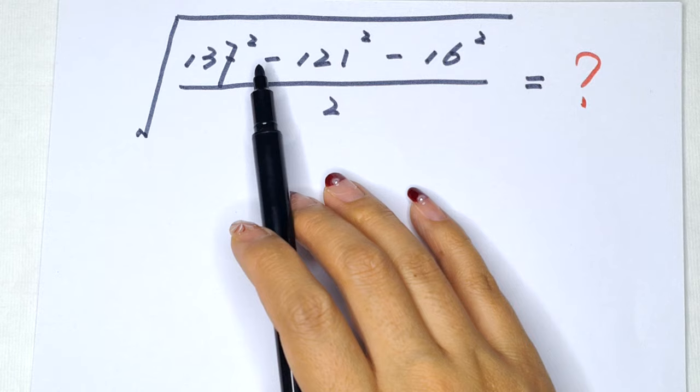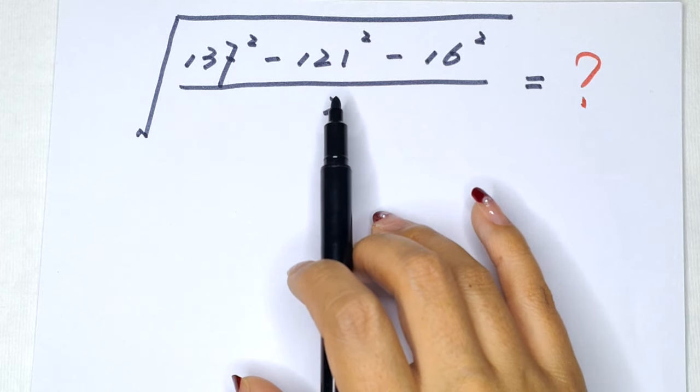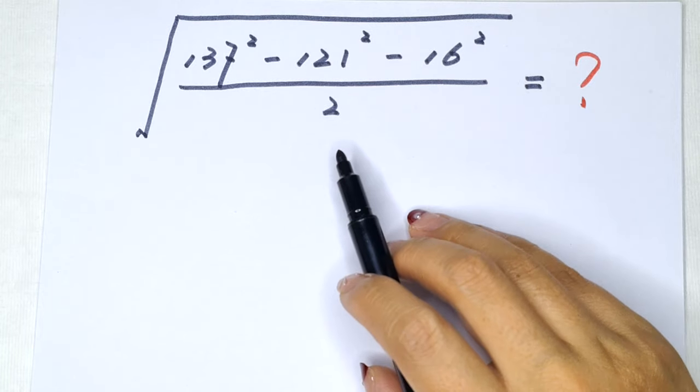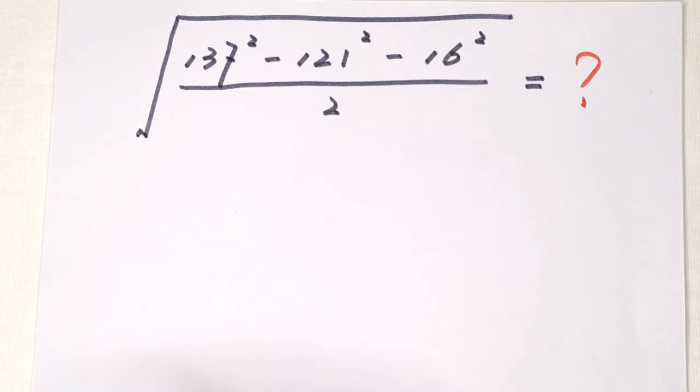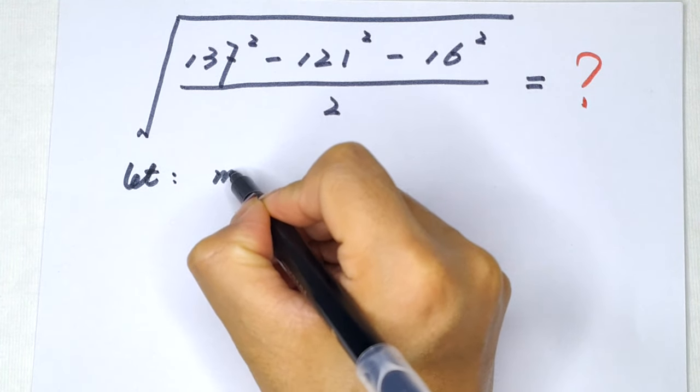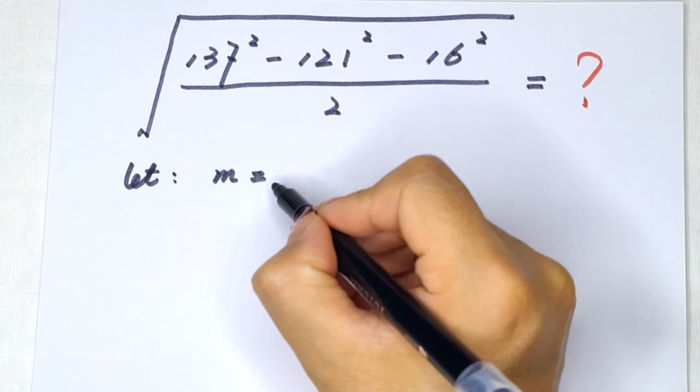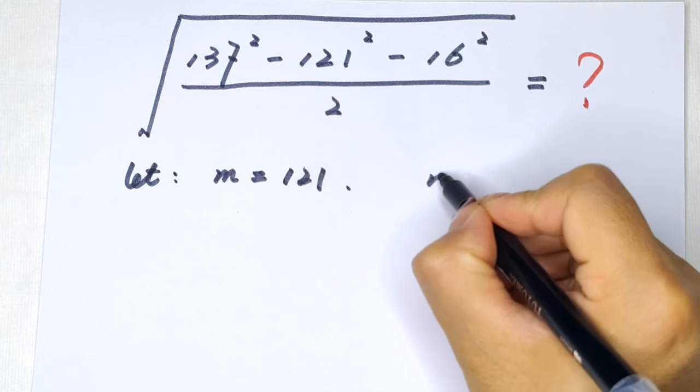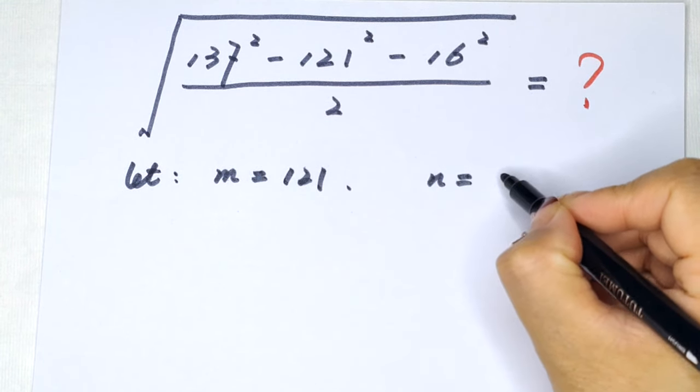137 squared minus 121 squared minus 16 squared divided by 2. So first we let m equals 121, n equals 16.